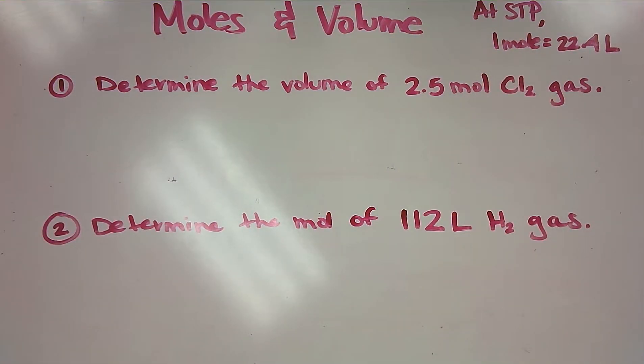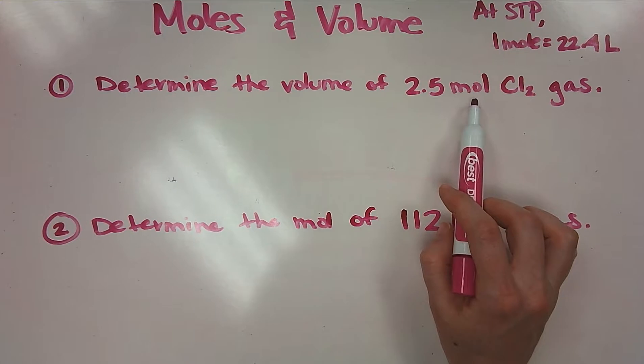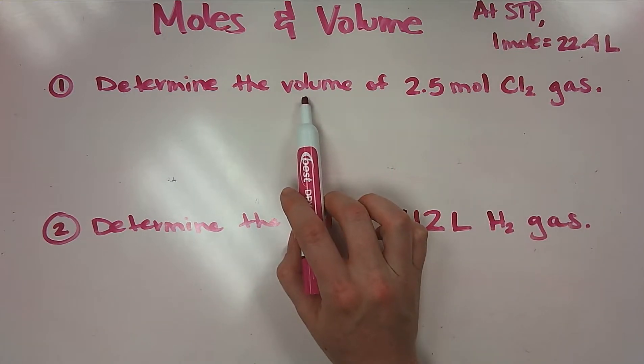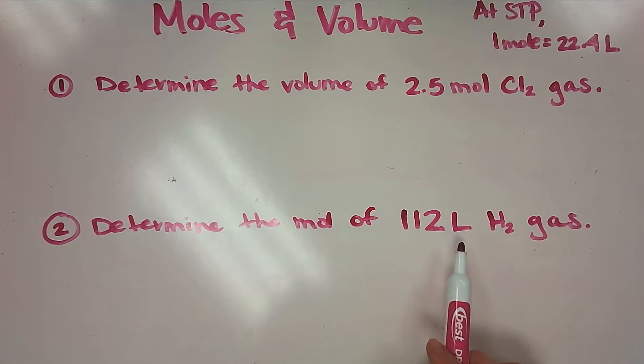We're going to go through two types of problems. The first one, we're going to convert moles to volume, so moles to liters. And the second one, we're going to go from liters to the number of moles. Let's get started. Number one: determine the volume of 2.5 mole of chlorine gas.